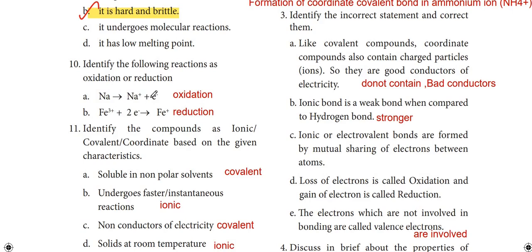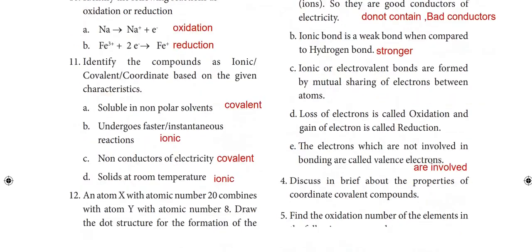Ninth question: identify the following reactions as oxidation or reduction. Na → Na⁺ + e⁻: this is an oxidation reaction because an electron is lost. The second reaction involves electron gain, so it is a reduction reaction.